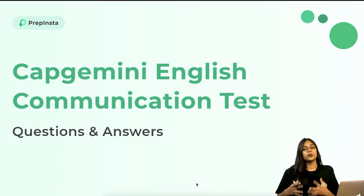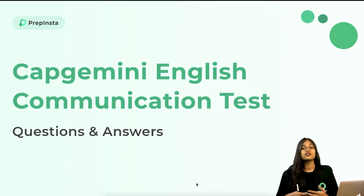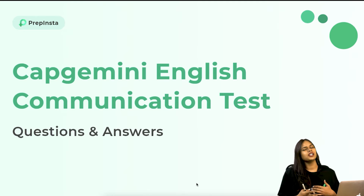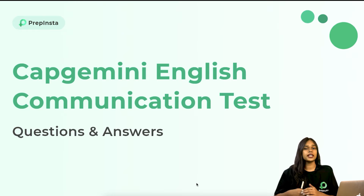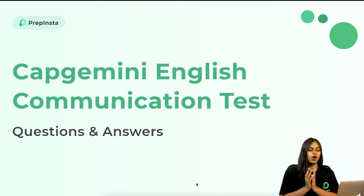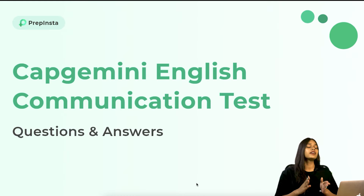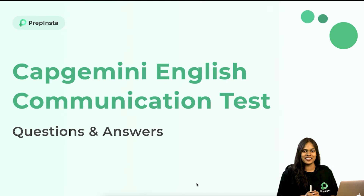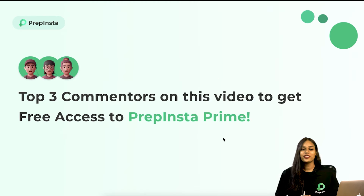It's a general verbal ability section where you have questions from several topics such as grammar, tenses, speech, reading comprehension, etc. The difficulty level of Capgemini English Communication can be called medium — not too high or too low, but a stable standard of medium difficulty questions. We are going to start discussing these questions in the upcoming slides.